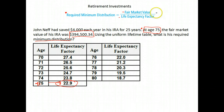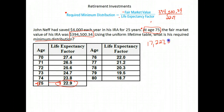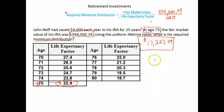So we take the market value of his retirement account, $394,500.34, divide it by that factor of 22.9, the number we got from the chart. When we do that, we get $17,227.09. That's the minimum amount he is required to take out of the account when he starts withdrawing from it.